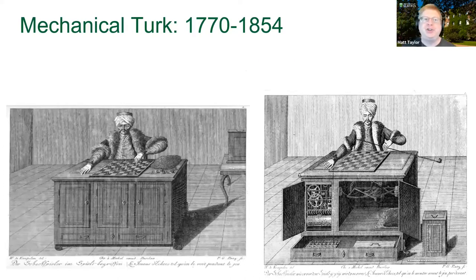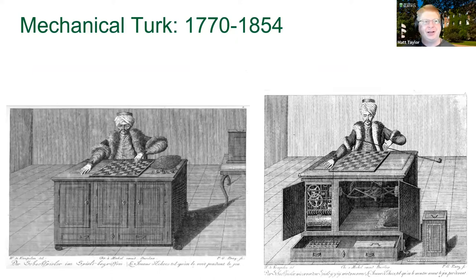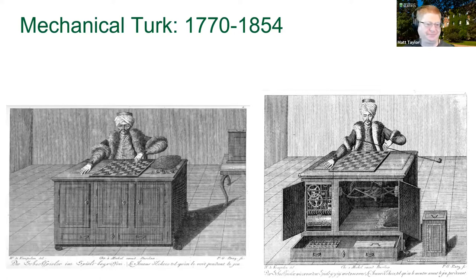Last time I mentioned the Mechanical Turk. I thought I would show you a picture of it. It was actually started in the late 1700s. On the left you can see what the audience saw, and on the right is the inside where there was a little guy moving the levers around. I think it was the first example of a robot that was actually a human — a cool piece of AI history trivia.